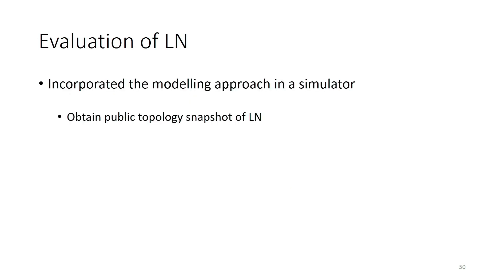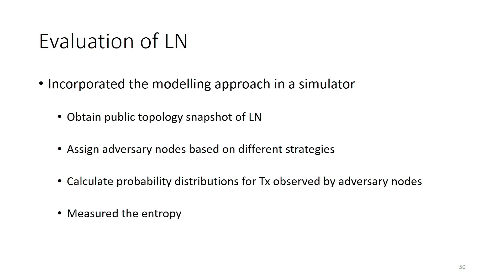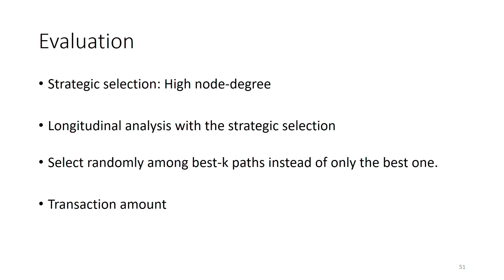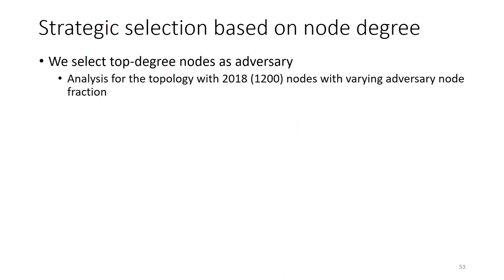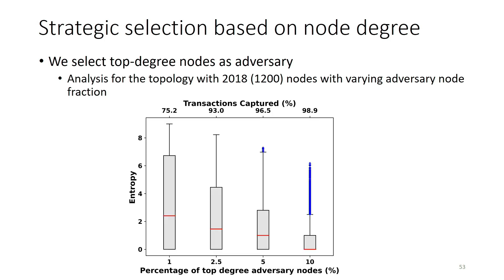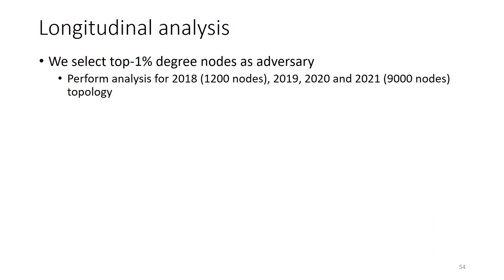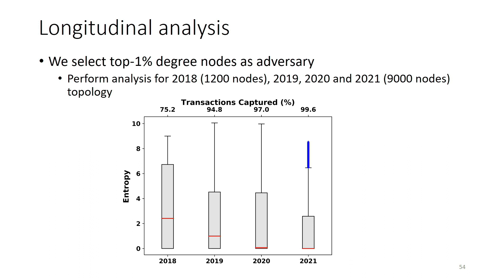For the Lightning Network evaluation, we obtained the public graph, assigned adversary nodes, calculated entropy, and examined multiple strategies. Looking at two strategies — selecting the top 1%, 5%, and 10% high-degree nodes as adversaries — when considering 1% of nodes in the 2018 topology with 1200 nodes, the median entropy is about 2 bits, meaning doubt among four possible originators, but 25% of transactions can be completely de-anonymized. By 2021, for 50% of transactions in the current Lightning Network, they can be completely de-anonymized.